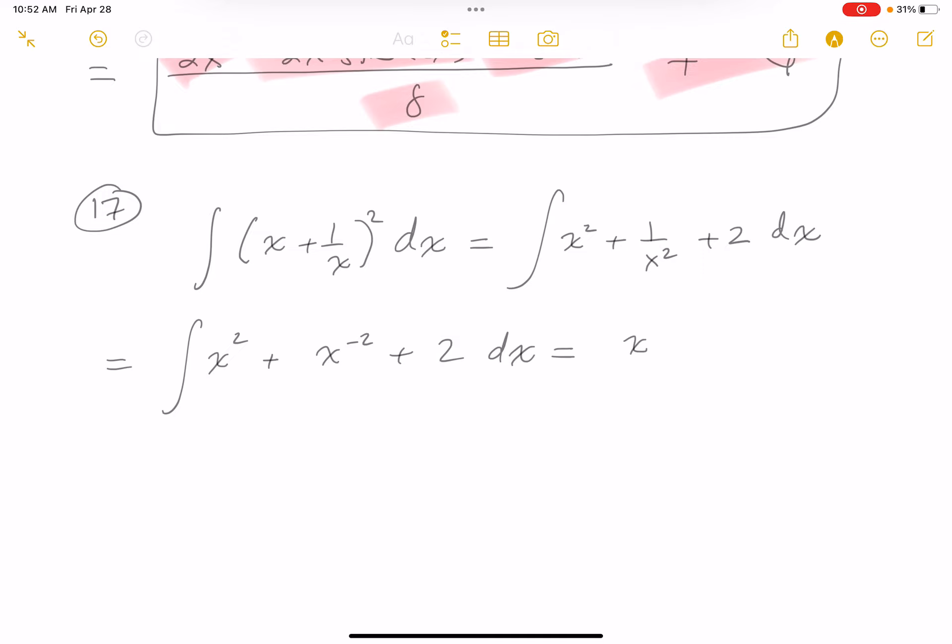What do you get there? x cubed over 3. Then you're going to get x to the minus 1 over minus 1, so let's say minus, and then 2x plus c.